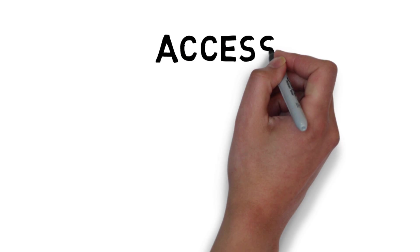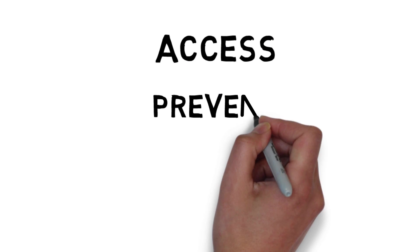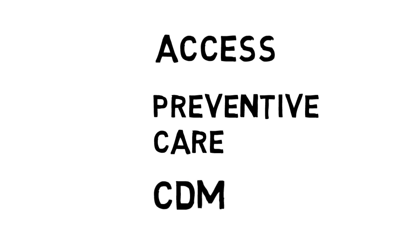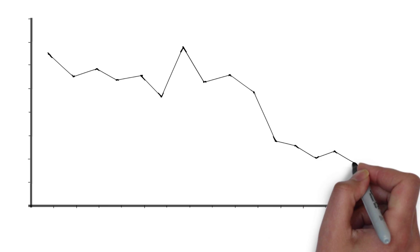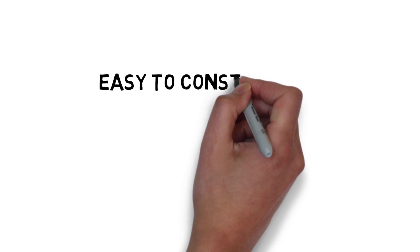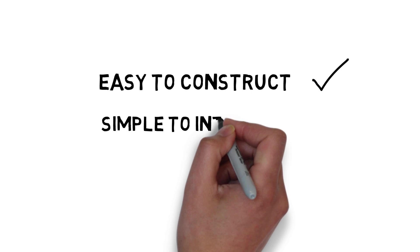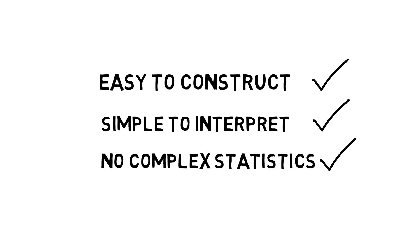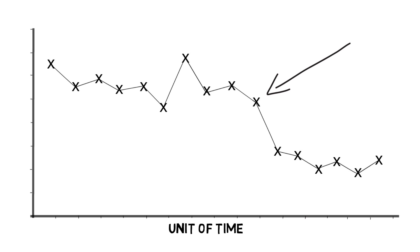Whether we are looking at access to care or preventive care, such as breast cancer screening rates, or data related to chronic disease management, the display of this data on a run chart informs us about the behavior of the system over time. A run chart is useful because it is easy to construct, simple to interpret, and much can be learned about the performance of a process without using complex statistical analysis.